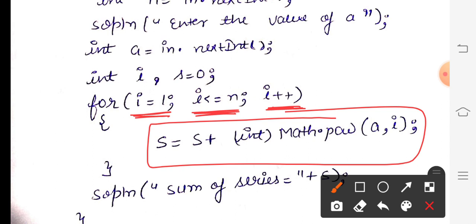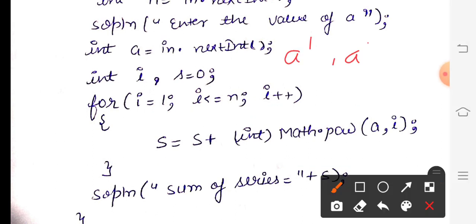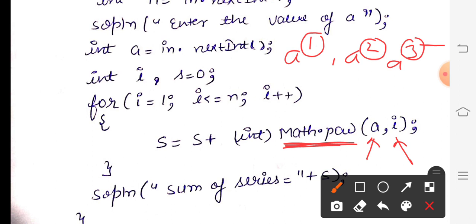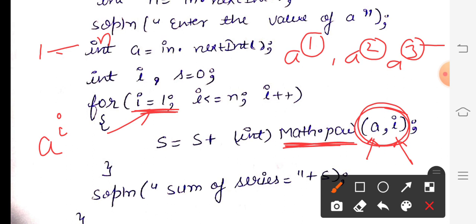Inside the loop, we need to calculate the power — a¹, a², a³ — so we use math.pow. Write math.pow(a, i). Why i? Because the power is changing: 1, 2, 3, 4 — these values are stored in i, which changes from 1 to n. So math.pow(a, i) calculates a to the power 1 first, then a to the power 2, then a to the power 3, up to a to the power n.